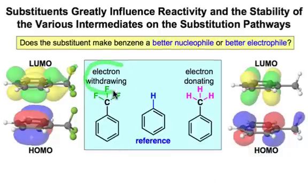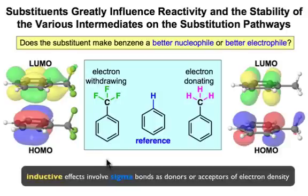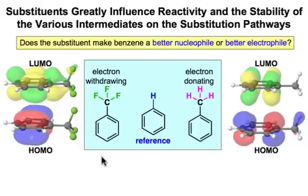Substituents can withdraw electron density from the π system to make it a better electrophile, or donate electron density to make it a better nucleophile. Substituents that act by inductive effects — such as a trifluoromethyl group or a methyl group on the benzene ring — involve σ and σ* interactions with the π system. We can look at the frontier molecular orbitals to decide how these substituents influence the electrons in the π system.